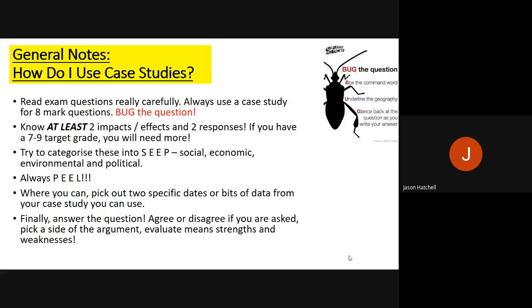For each case study you must know at minimum two impacts or effects and two responses, if there are responses. If you have fewer than two impacts you will not reach a high level out of eight marks. If you're aiming for a grade seven to nine you'll need around four impacts to discuss at length. Try to categorise your impacts into social, economic, environmental and political categories.